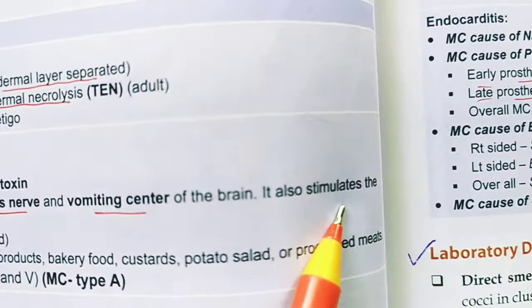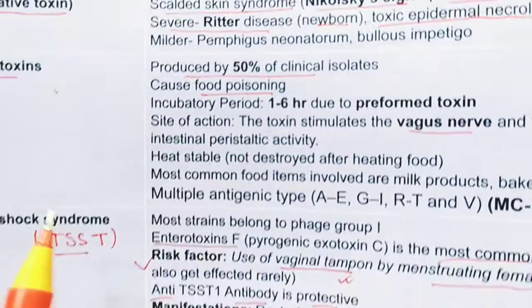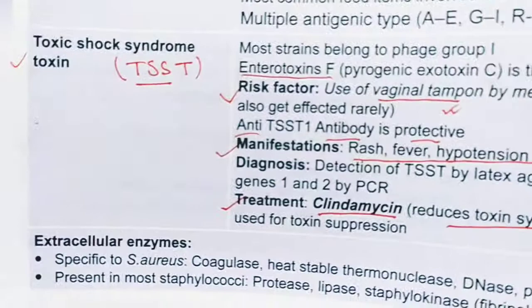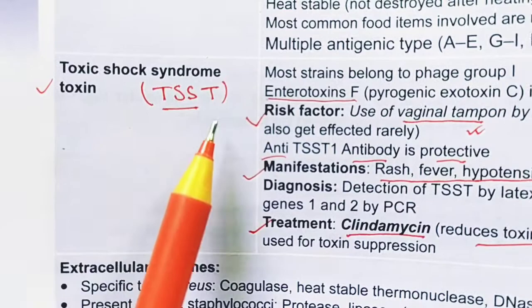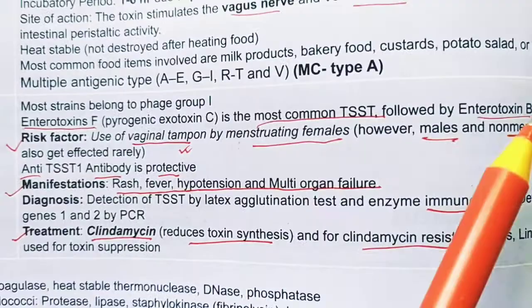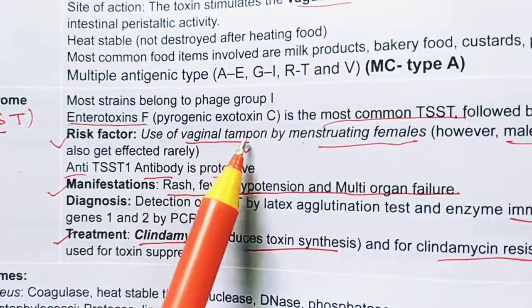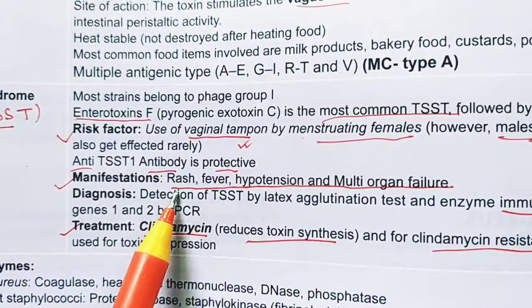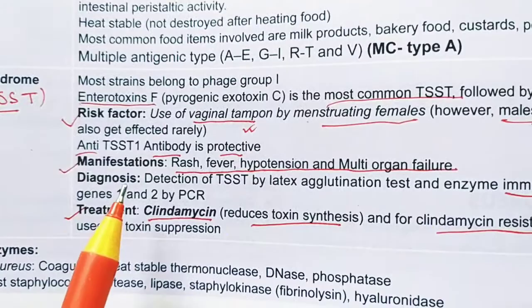Toxic shock syndrome toxin (TSST-1) belongs to enterotoxin F, which is the most common cause of TSS, followed by enterotoxin B and C. Risk factors include use of vaginal tampons in menstruating females. Manifestations include rash, fever, and hypotension, and can progress to multi-organ failure. Diagnosis is done by immunoassay.